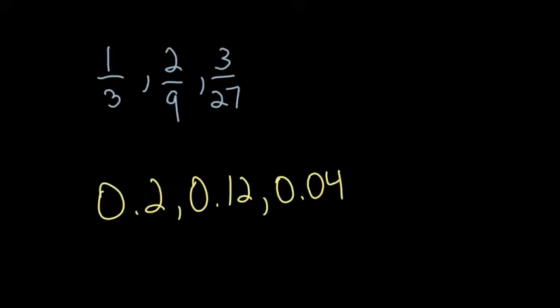Alright, let's try two more sequences. So we have one-third, two-ninths, three-twenty-sevenths. So if you look at the top, one to two is plus one, two to three is plus one. So it looks like we're adding one on the top, our numerator.